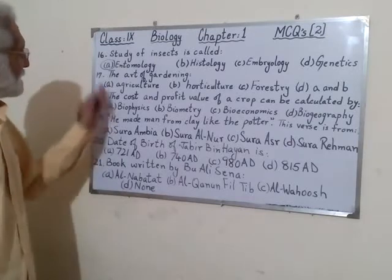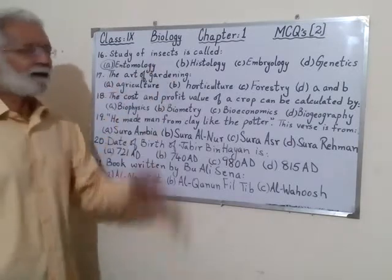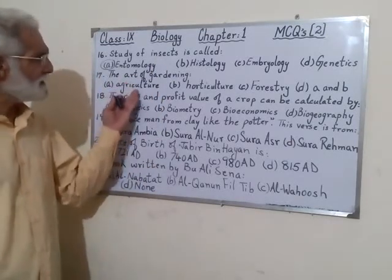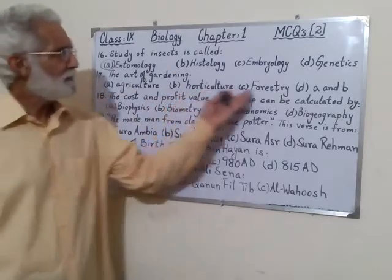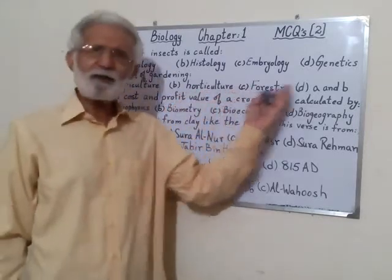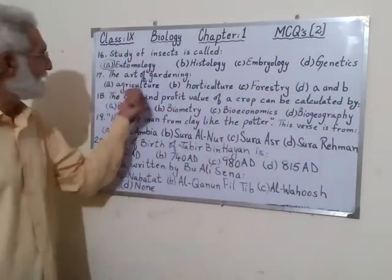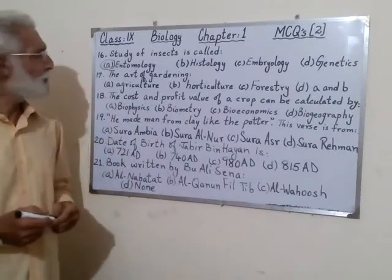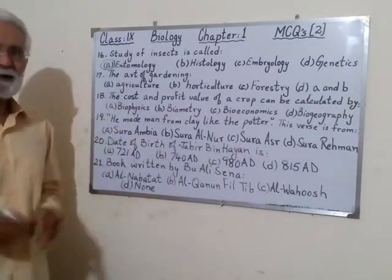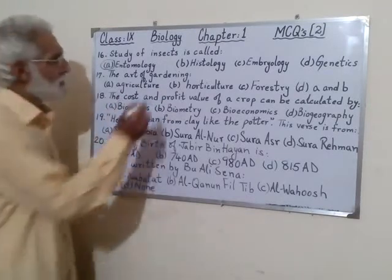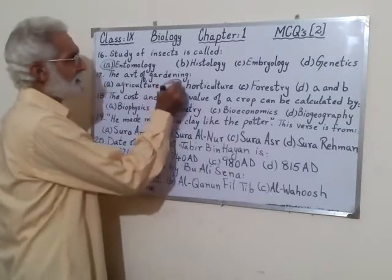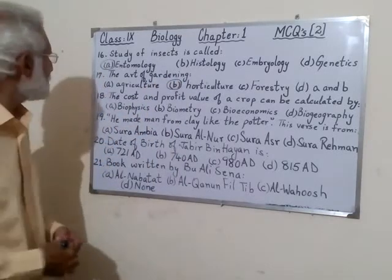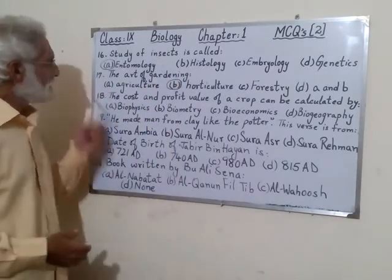Number 17: the art of gardening — is it just for agriculture, horticulture, forestry, or both agriculture and horticulture? Agriculture is something else, so the correct answer is choice B: the art of gardening is called horticulture.